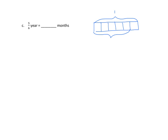If we take a year, we know that one year equals twelve months. Since we have twelve months — the same as one year — we divide that twelve by six and get two in each part. We answer the question: it equals ten months, as we can see in the representation.